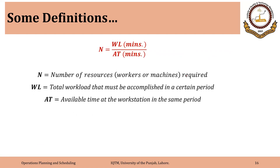The formula to calculate the number of workers or machines required is workload divided by available time. We can express workload in minutes or other time units — the straightforward way is to express workload in terms of minutes. The ratio of the two gives us the number of resources required, which could be the number of machines, number of workers, or both if a machine is to be operated by a worker.